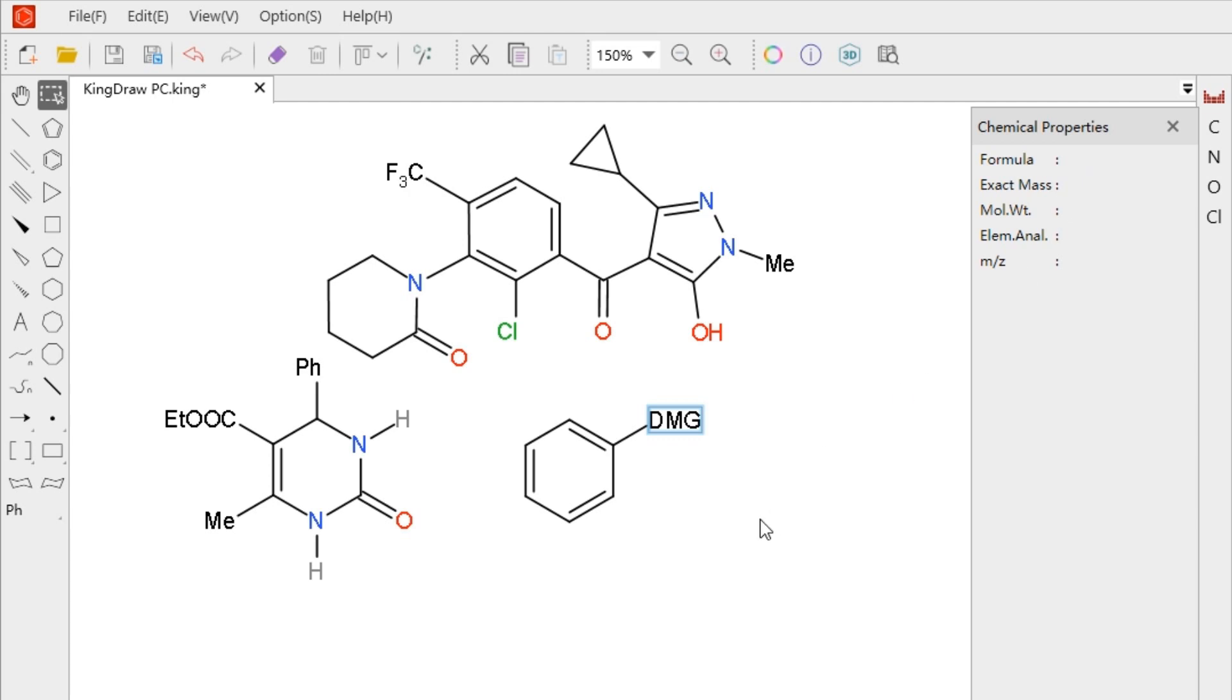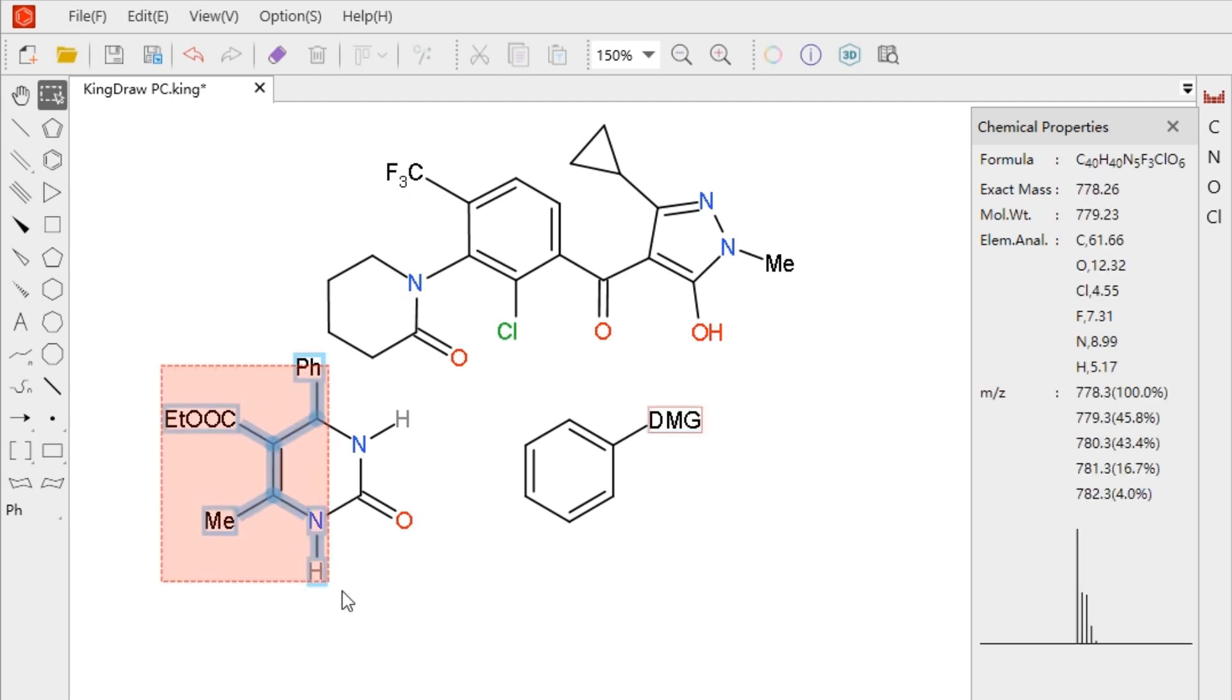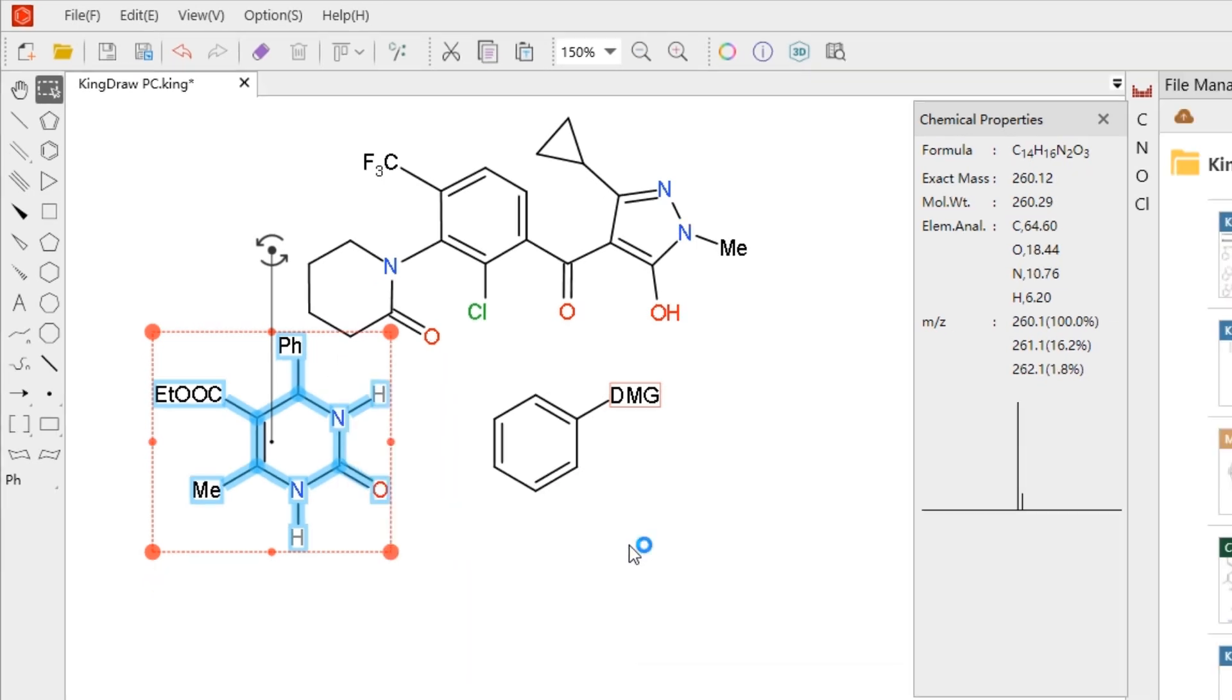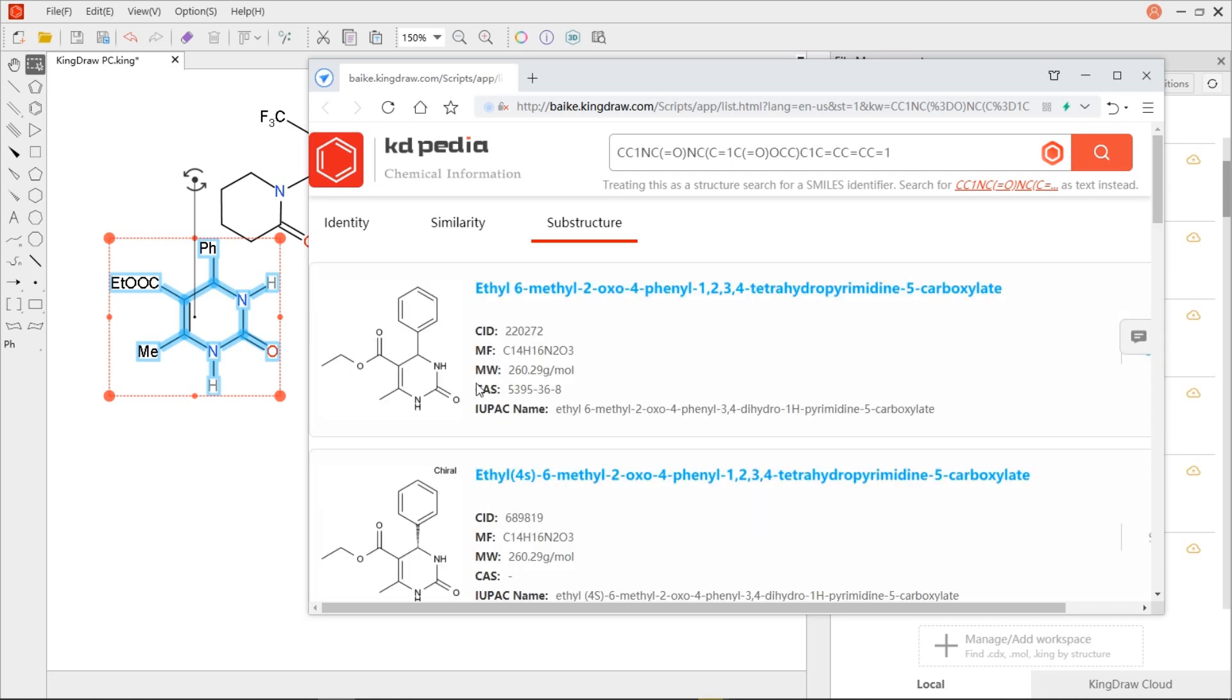If you want to know more information, we can select our structure and click Search Structural Kindropedia in the right-click menu to query more detailed compound information.